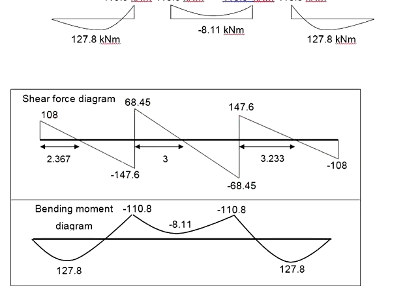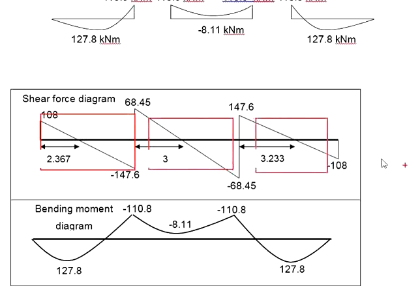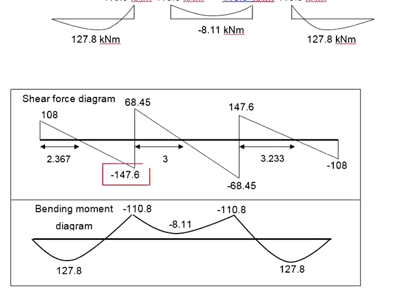There are a few ways to design shear reinforcement. You may design for the largest shear of 147.6 kN and apply it to all three spans. If you want to save the cost of shear links, you may also design for the minimum shear link. Based on the minimum shear link capacity — let's say 68 kN — you draw two lines at that level on the shear force diagram. Within the boundary of the minimum shear link capacity, provide the minimum shear link; beyond that, use the shear link designed for 147.6 kN.